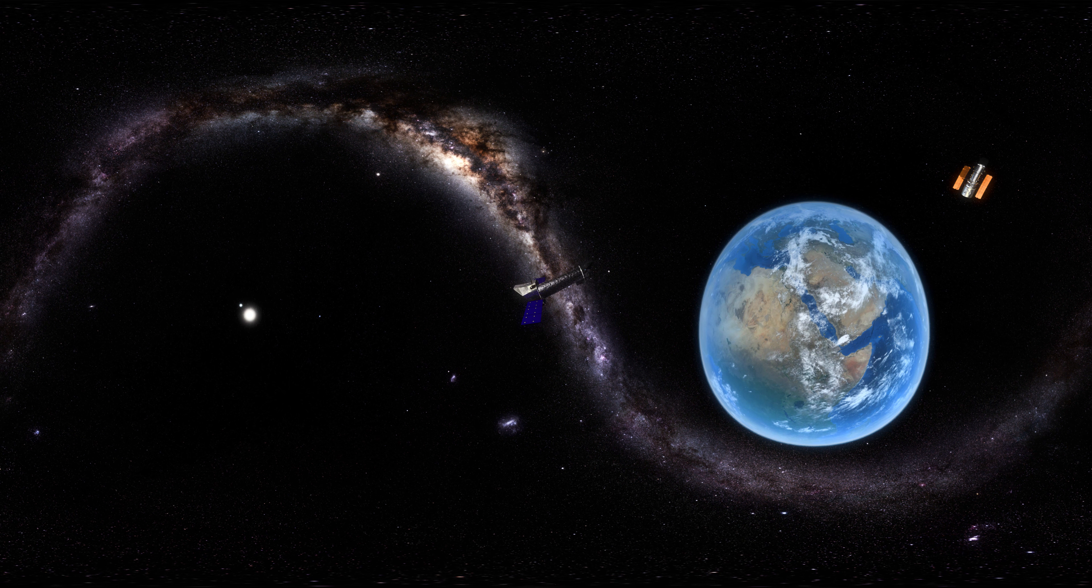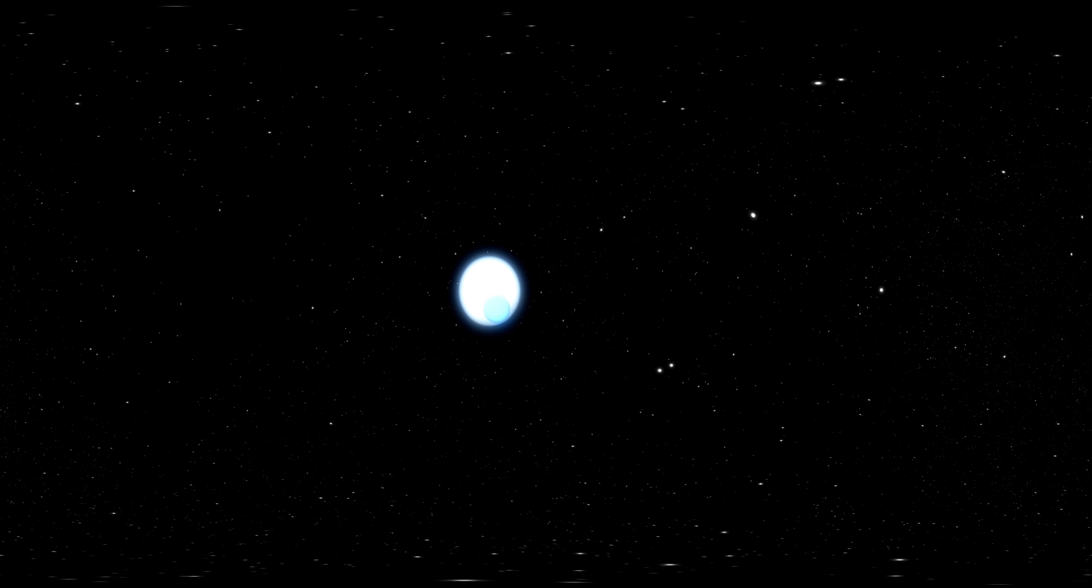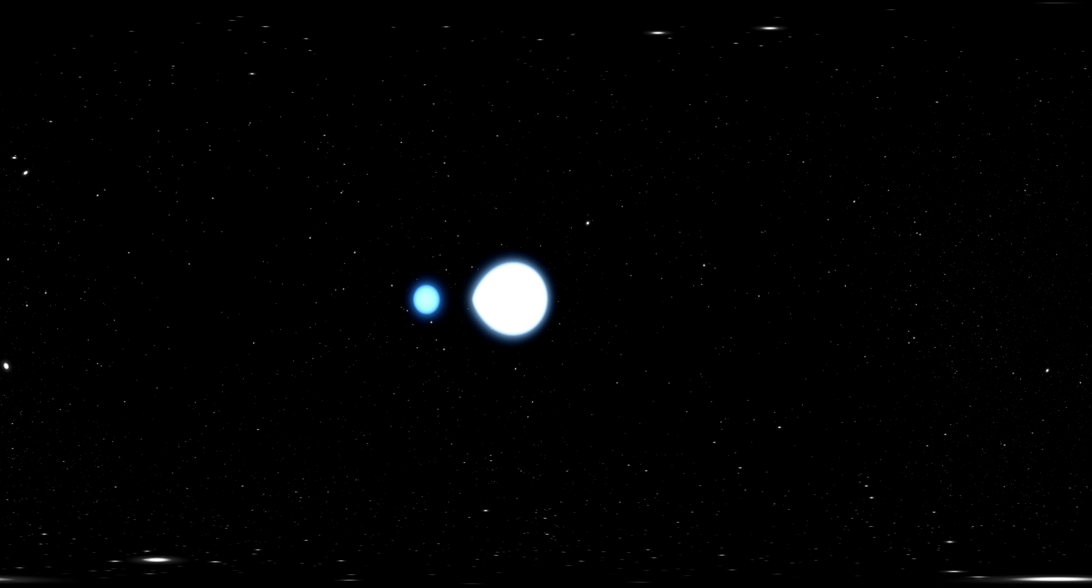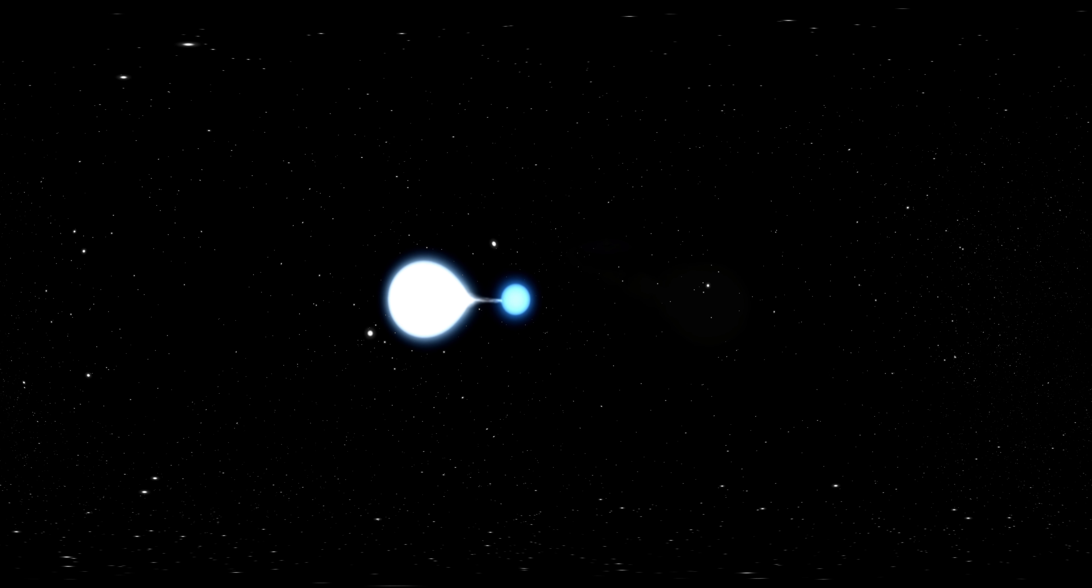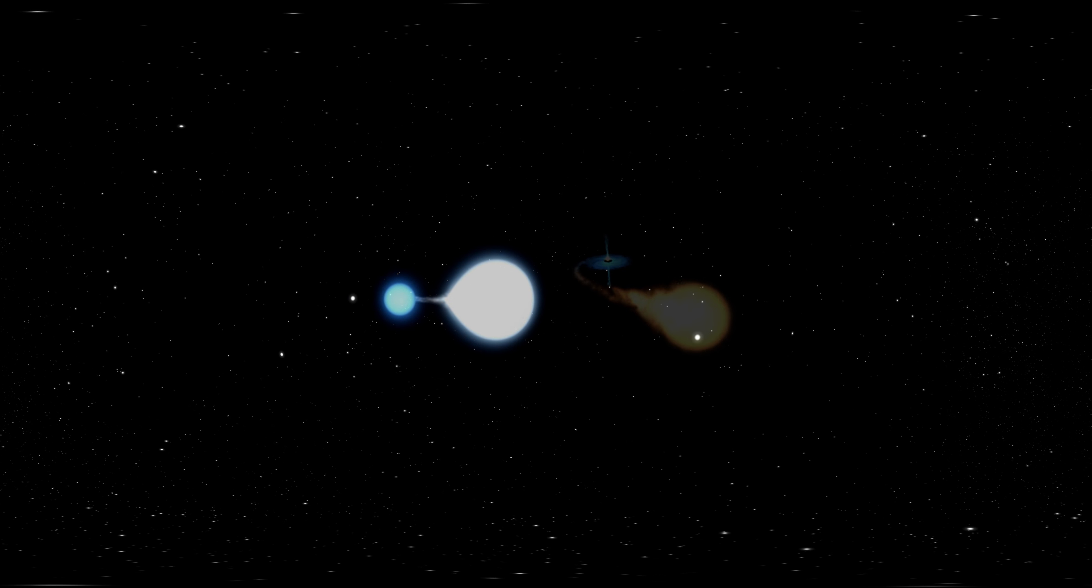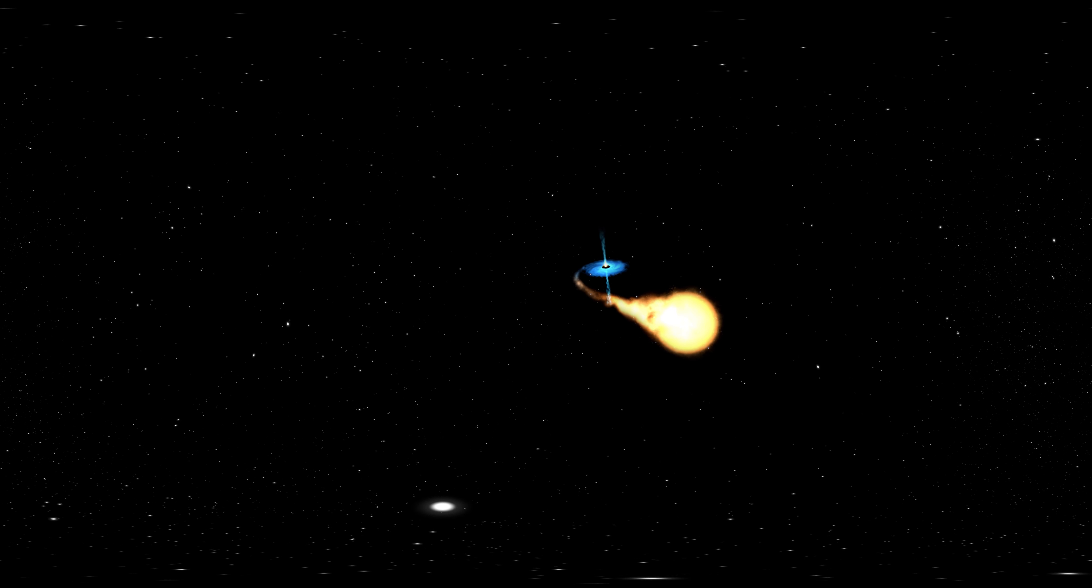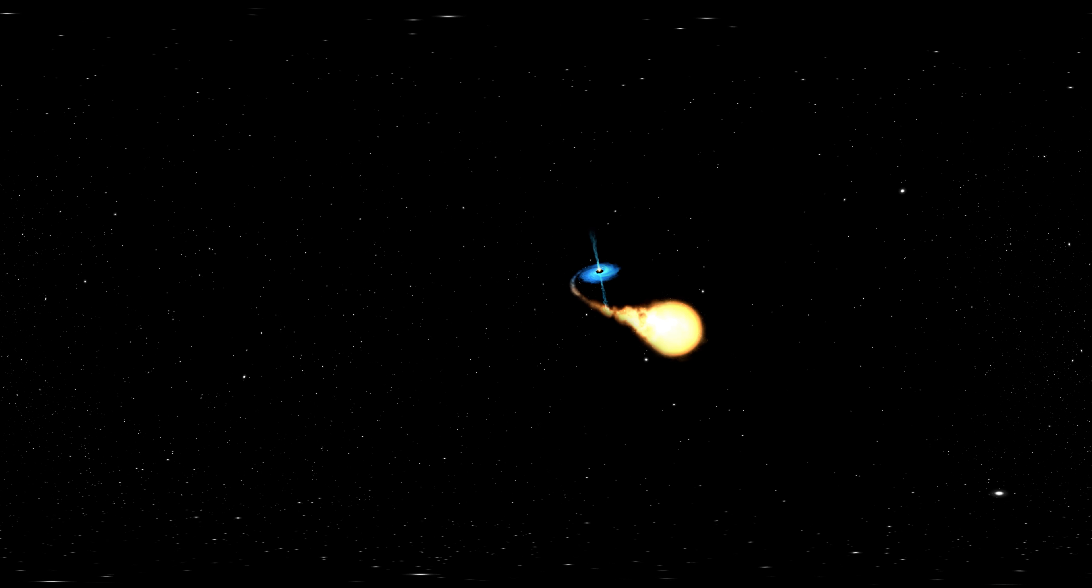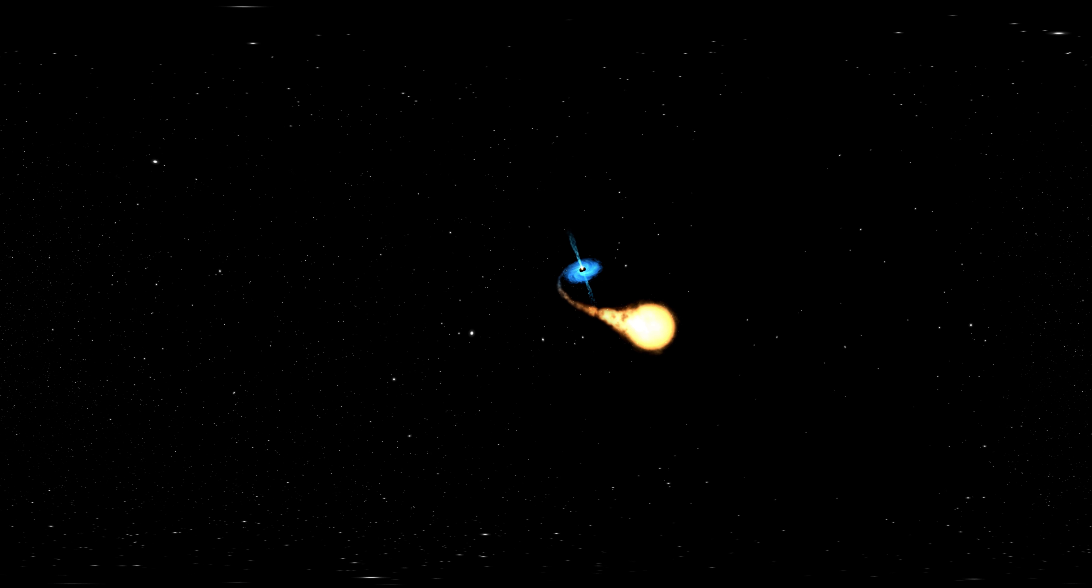We also observe binary stars that are very close together and interact strongly with each other. There are special cases where one of the binary stars is very dense, like a neutron star or a stellar mass black hole. In these cases, mass is transferred to the neutron star or stellar black hole from the accompanying star. Then an accretion disk is formed which emits large amounts of X-ray radiation.